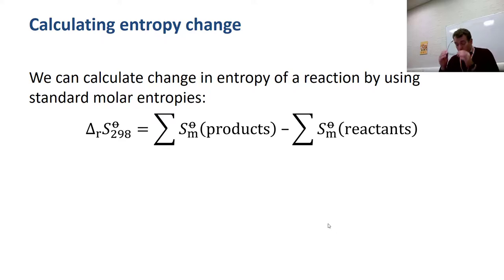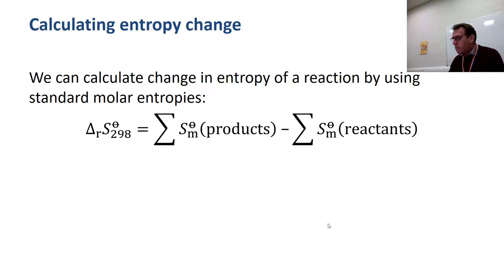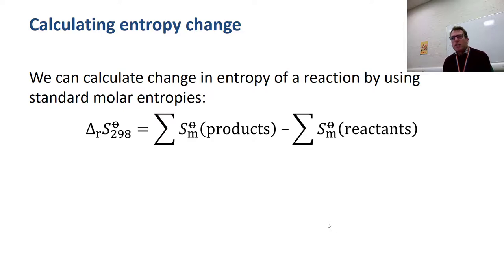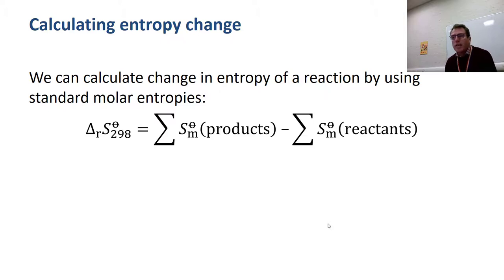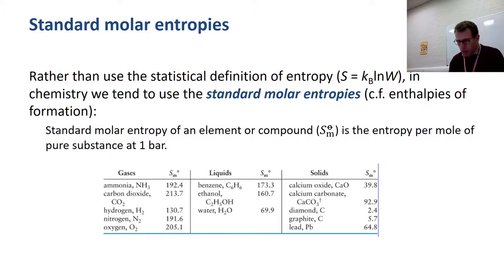In chemistry we are not so much interested in the absolute values of entropy as in how the values change as a result of a chemical reaction. Just as we did for enthalpies of formation, we can work out the entropy of reaction by taking the standard molar entropies of products minus the standard molar entropies of reactants. It is very straightforward to calculate reaction entropy using tabulated standard molar entropy values, using exactly the same approach as for enthalpies of formation.